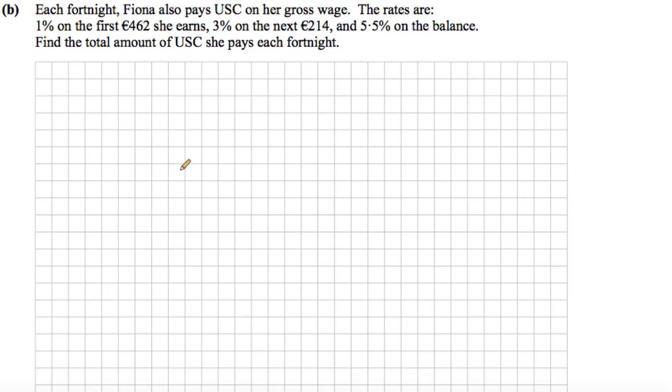Okay, part B. Each fortnight, Fiona also pays USC on her gross wage. The rates are 1% on the first €462 she earns, 3% on the next €214, and 5.5% on the balance. Find the total amount of USC she pays each fortnight. Okay, so 1% as a decimal is 0.01. We just divide by 100 to get from percentage to decimal. So we're going to be finding 1% of €462, that gives us €4.62.